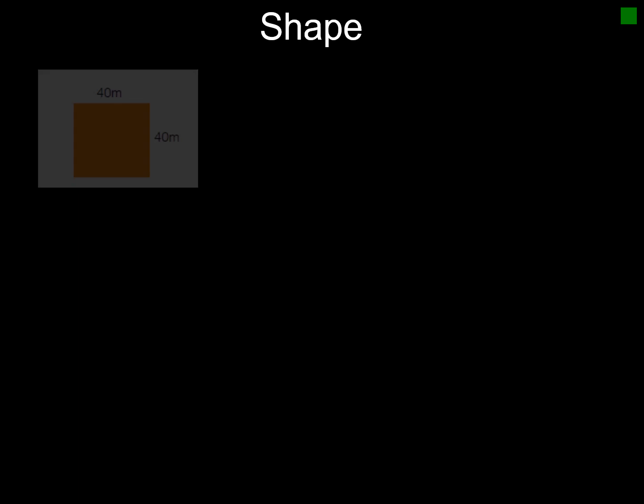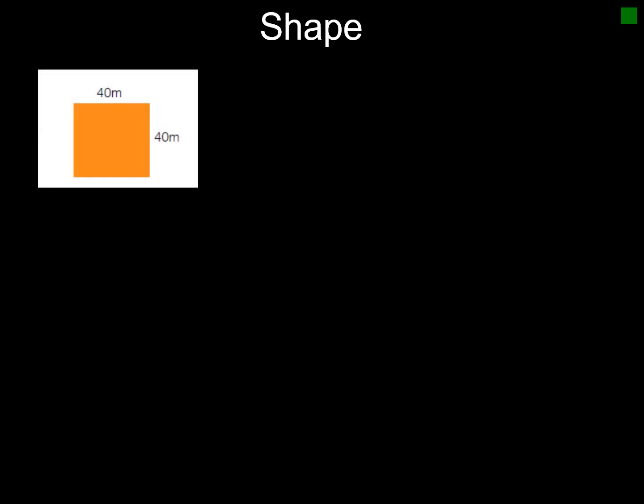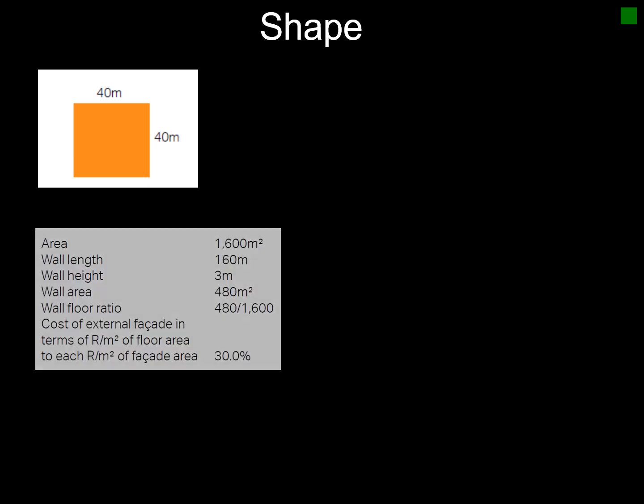This is background on the shape of a building and how it actually influences the project — very useful whenever you do your Task 1. We've got two shapes to look at. The first one is a square shape of 40 by 40 meters, and we can calculate that the total floor area is 1,600 square meters.